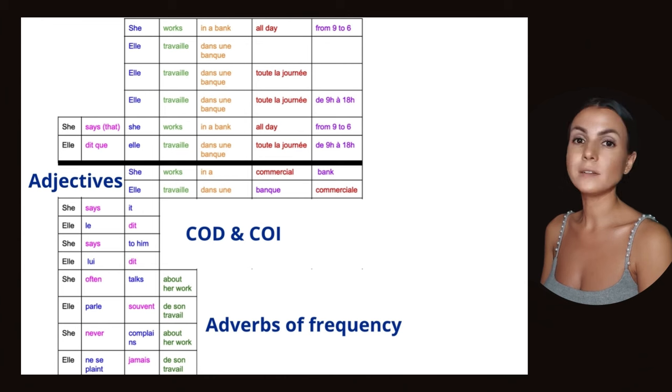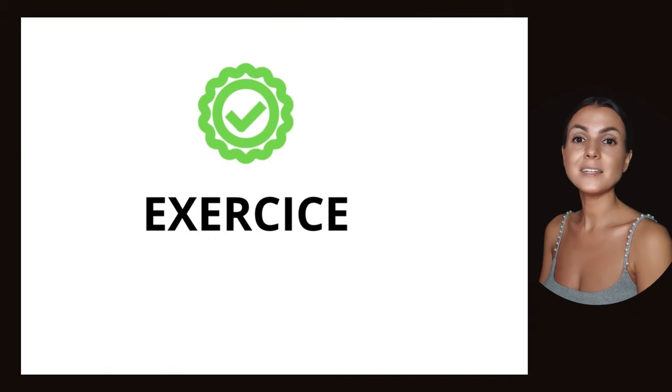So this is our final table. I hope it's not too small and you see. Basically the first part here we have regular order, and then we have our three cases: adjectives and nouns, verbs and COD/COI, and adverbs of frequency with the verb. This is it.